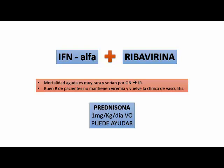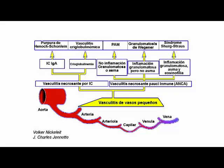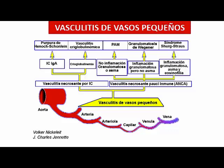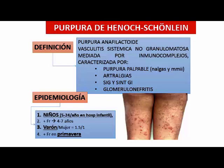Las crioglobulinas asociadas a hepatitis C son policlonales, fundamentalmente policlonales. Ahora vamos a la púrpura anafilactoide, o la púrpura de Schönlein-Henoch como se llama.